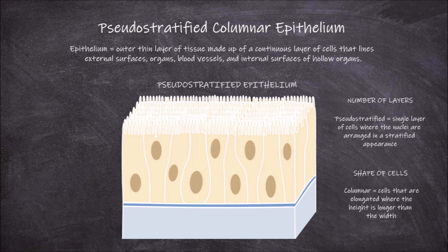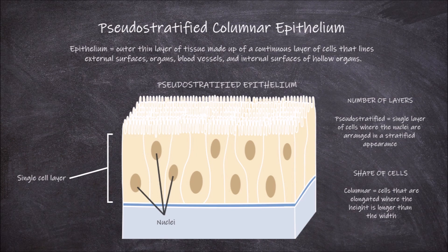Pseudostratified columnar epithelium is made up of a single layer of cells that are elongated and columnar in shape and of varying heights. The nuclei of adjacent cells do not line up in the same place but instead in different locations, giving the appearance of more than one cell layer — of being stratified. The single layer of cells sits on the basement membrane.